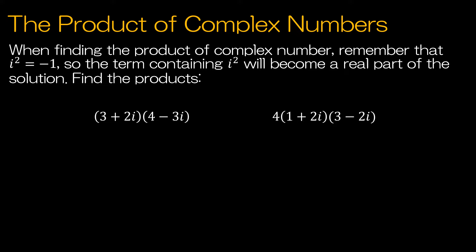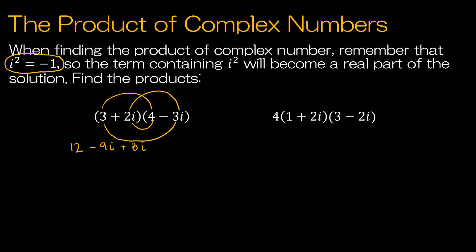When finding the product of complex numbers, the main thing to keep in mind is that you will generally end up with an i² value, and you're going to turn i² into negative 1. So whatever that term is will be added to the real part of your solution. For this first question with two binomials, I'm going to FOIL. First times first: 3 times 4 is 12. Outside: 3 times negative 3i is minus 9i. Inside: plus 2i times 4 is plus 8i. Last: 2i times negative 3i is minus 6i².